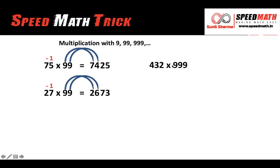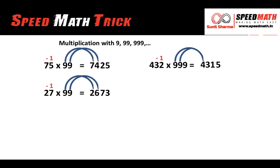Let's take one more example: 432 multiplied by 999. The number of nines in 999 is 3 and the number of digits in 432 is also 3, so the condition is met. Step 1: 432 minus 1 is 431. Step 2: subtract 431 from 999 — 9 minus 4 is 5, 9 minus 3 is 6, and 9 minus 1 is 8. The answer is 431568.